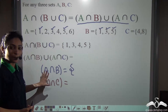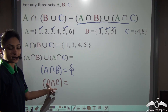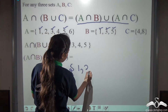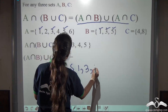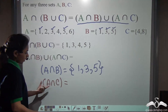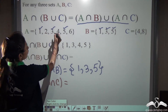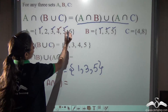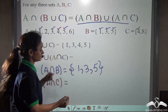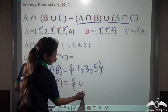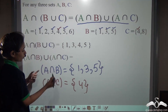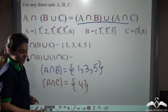Then what will A be called? A will be called the superset of set B. Now we come back to A intersection B and A intersection C. A intersection C — 4 is the only element common in both. So we write 4.